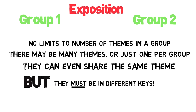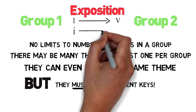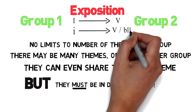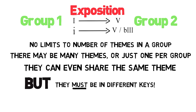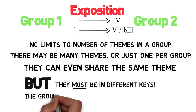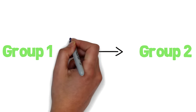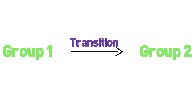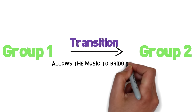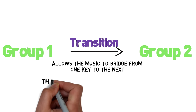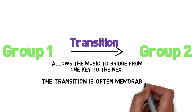Typically, if the first group was in a major key, the second group will be in the dominant key. If the first group was minor, the second group will move to the dominant or the relative major, though things get a little more adventurous as we progress through history. These two groups will often have very contrasting themes or moods, though that's not a necessity for sonata form — however, it can definitely make the drama more interesting. These two groups are normally connected together by a transition passage, which allows the music to bridge from one key to the next, and this transitional material might be memorable or interesting in its own right.